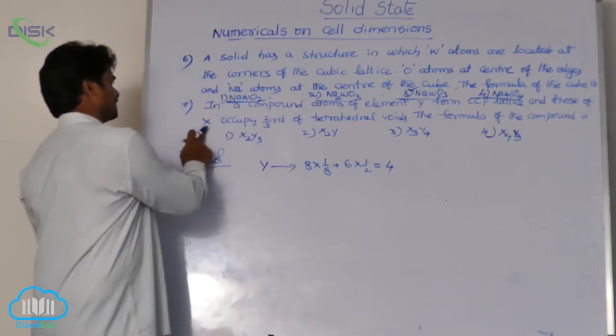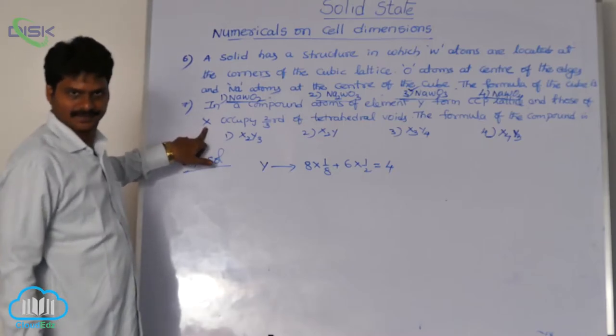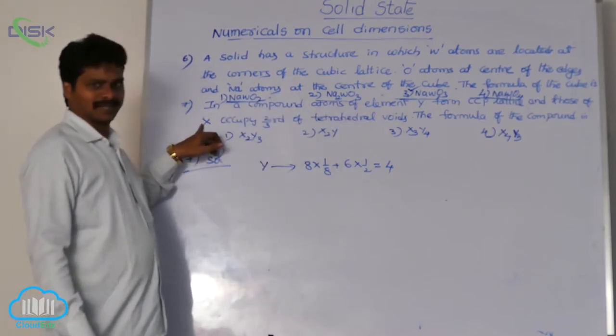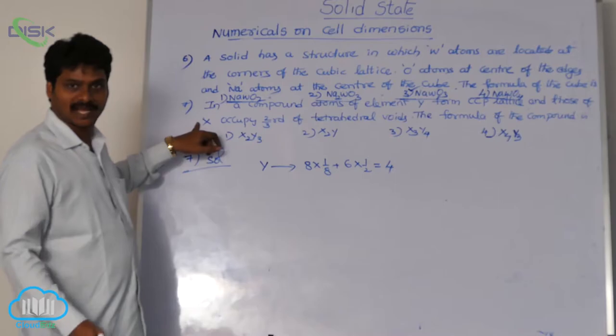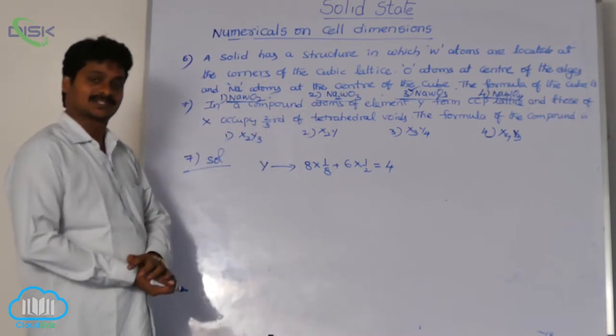The other atom is X. First atom Y, second atom X. Where do X atoms occupy? Two-thirds of tetrahedral voids. First, how many tetrahedral voids are there in FCC?